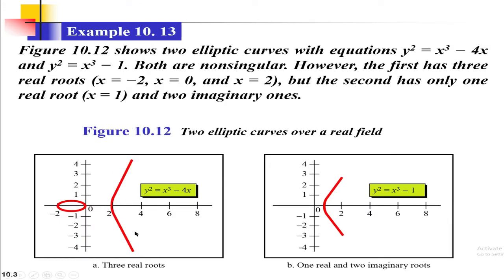If we plot an x versus y graph, the graph will look like this. Researchers are interested in three real roots because a horizontal line can intercept the curve at three points if all roots are real. For example, y² = x³ − 4x and y² = x³ − 1 are both non-singular elliptic curve equations. The first graph gives three real roots, while the second has one real and two imaginary roots. The curve is symmetric about the horizontal axis — the portions above and below the x-axis are mirror images.